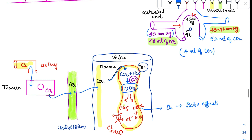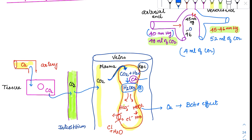Whenever CO2 enters, it enters the plasma and then goes into the RBC. Inside the RBC, CO2 combines with water to form carbonic acid (H2CO3), in the presence of an enzyme called carbonic anhydrase. This enzyme speeds up the reaction 5000 times. The carbonic acid then dissociates into bicarbonate (HCO3⁻) and H⁺.